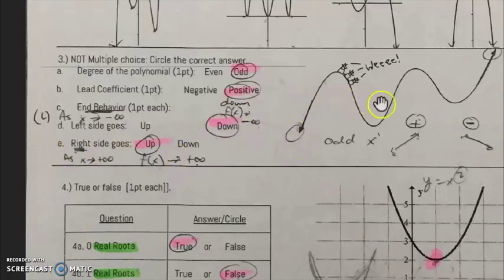Right side, as you go to the right side, that would be as x approaches positive infinity, so on the x-axis, the values are getting positive, bigger, then the f(x) values are going up, so that would be positive infinity, so it would be up.